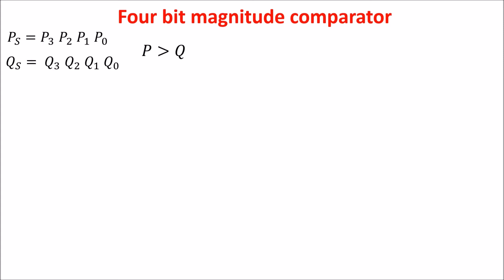Now, let's see how to build a circuit to detect if a number is greater than the other. It is convenient to start the analysis from the most significant bit P3 and Q3.